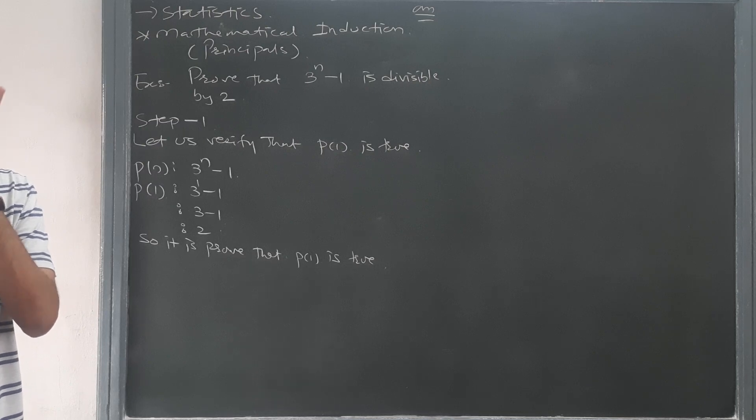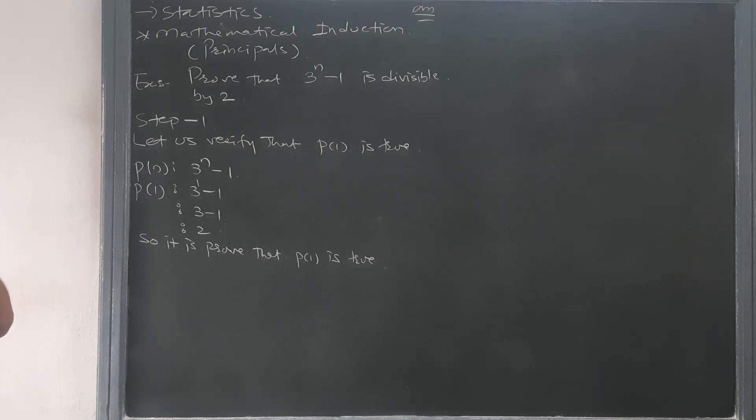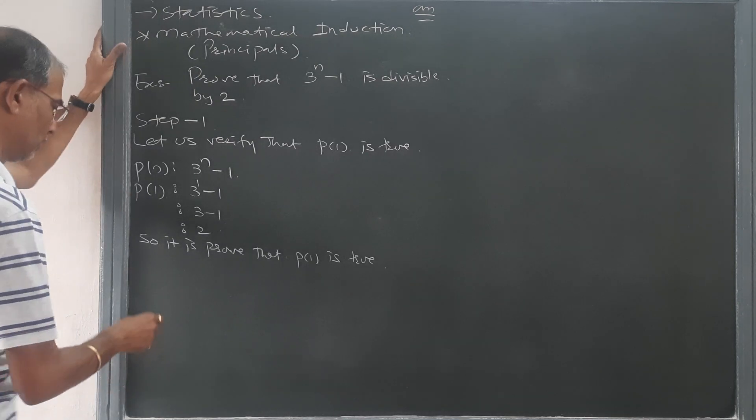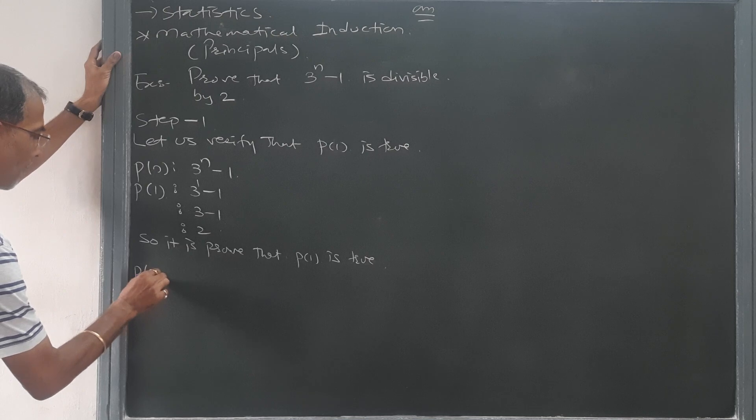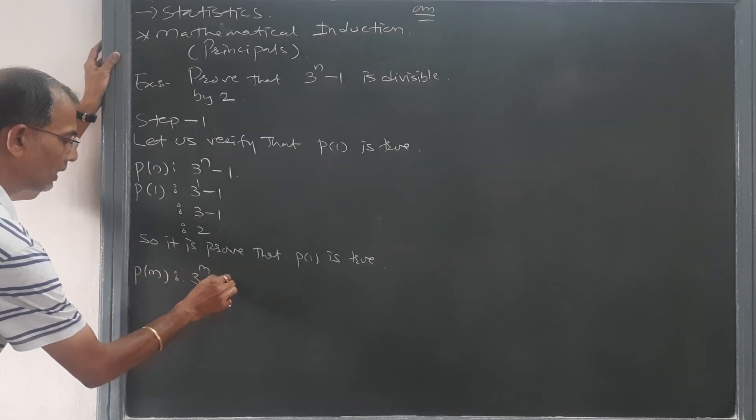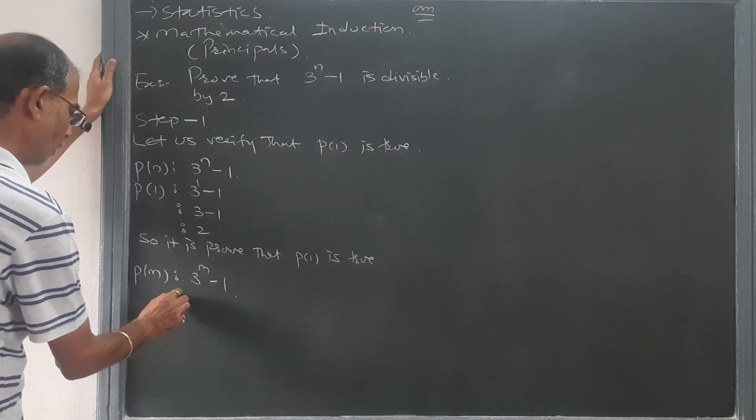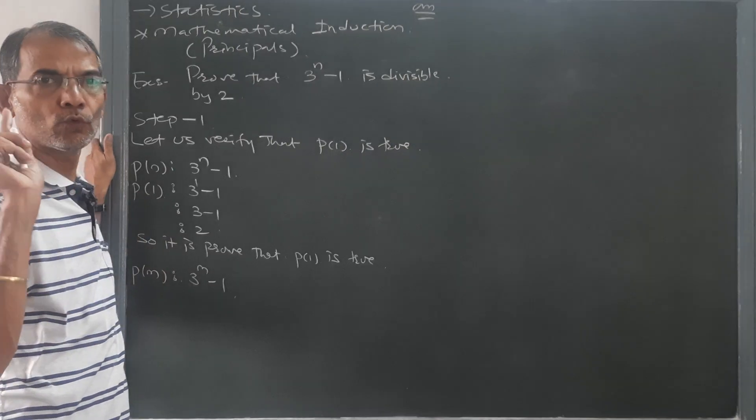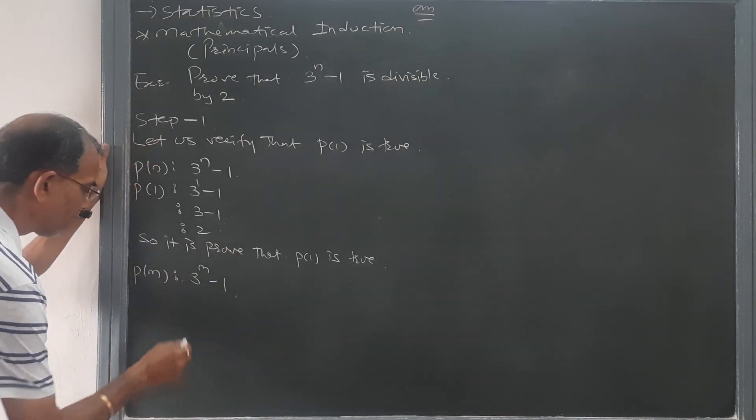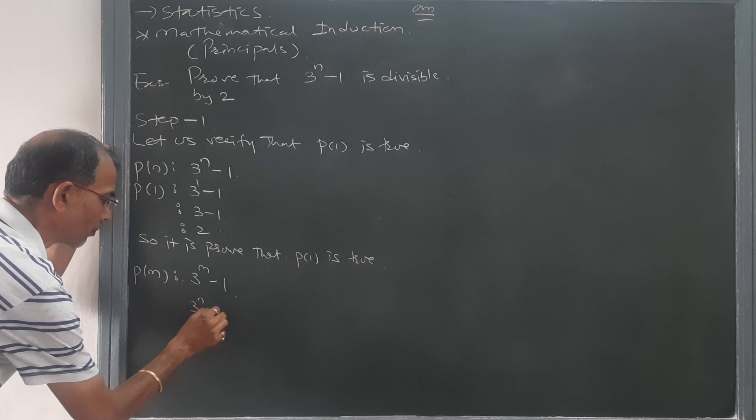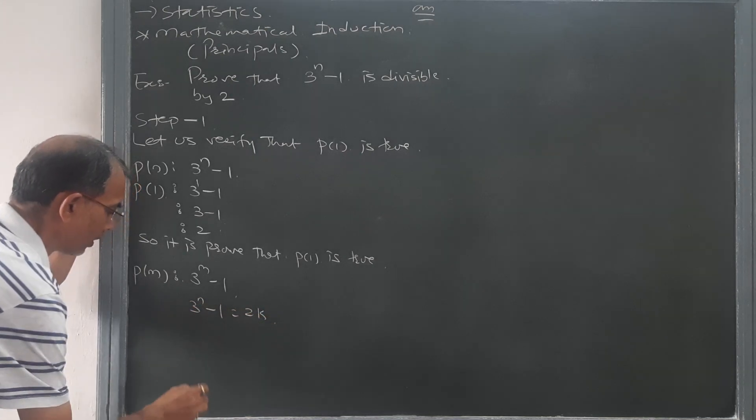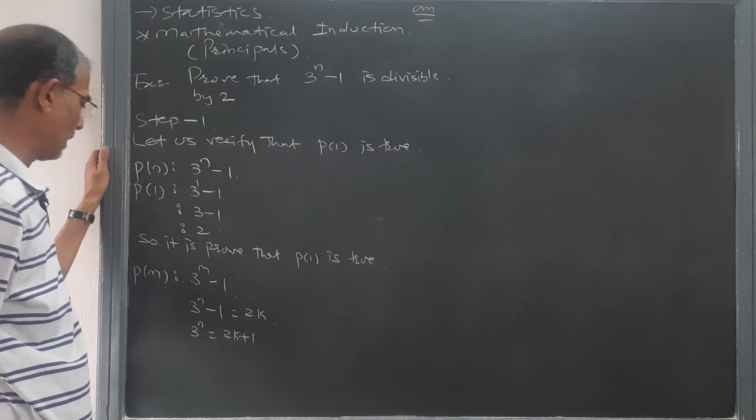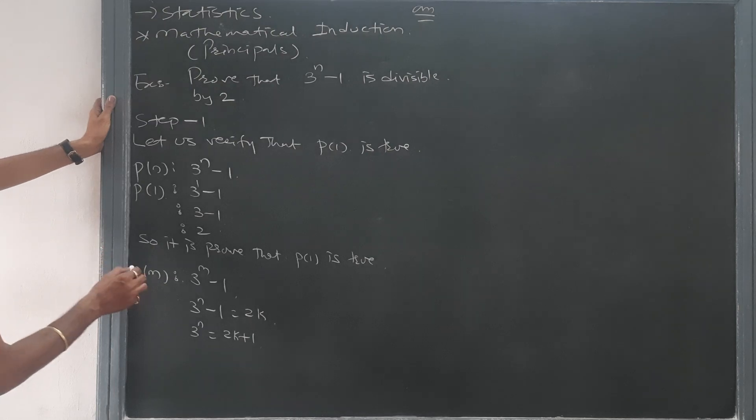Step number 2 says that verify it with P raised to m. That means P(m) will be 3 raised to m minus 1. It is said that it is divisible by 2, so we have to suppose it as 2k. That means 3 raised to m will be 2k plus 1. This is step number 2.